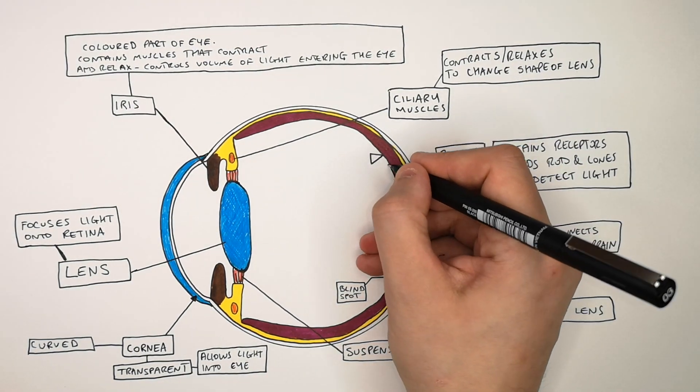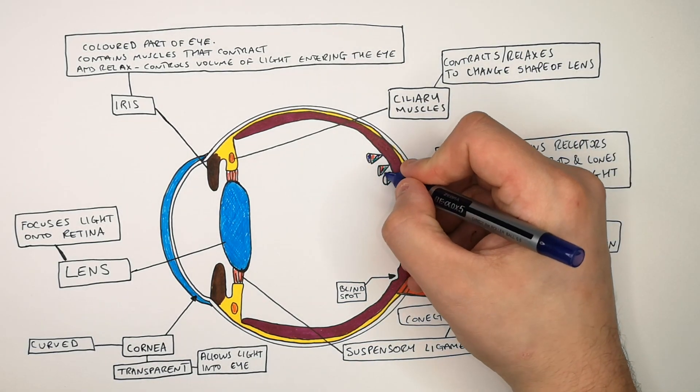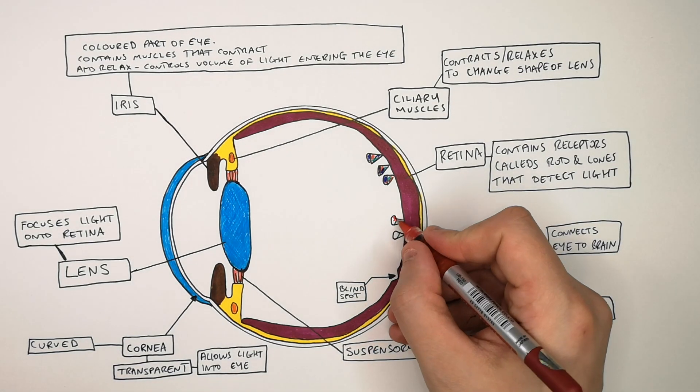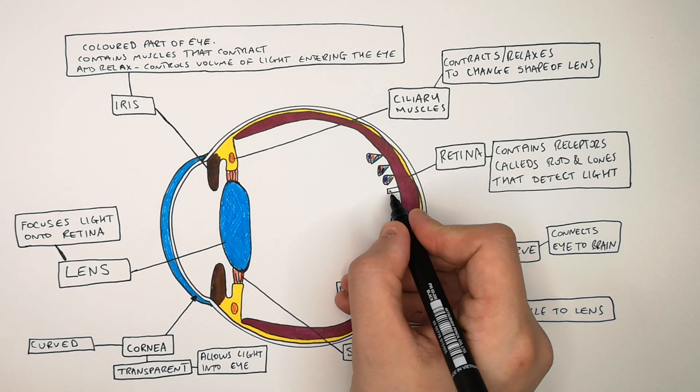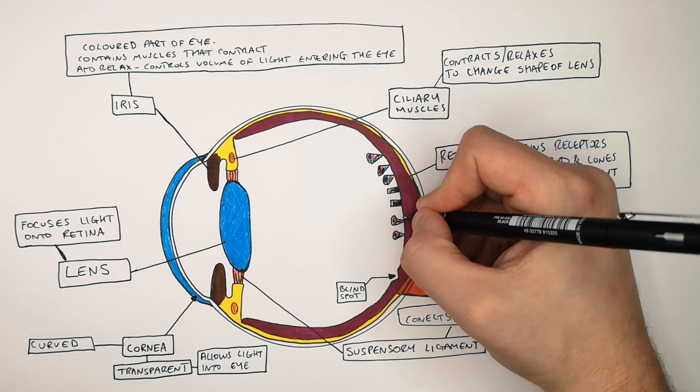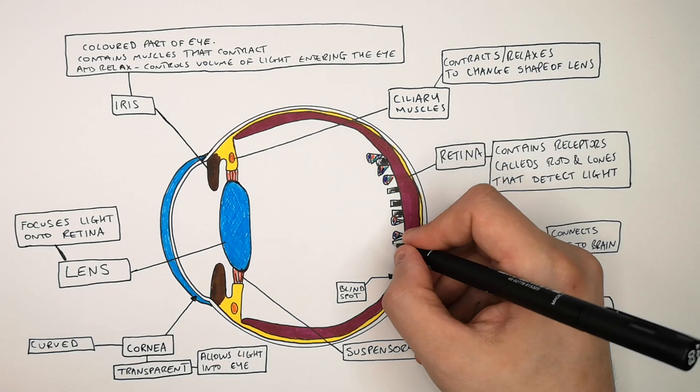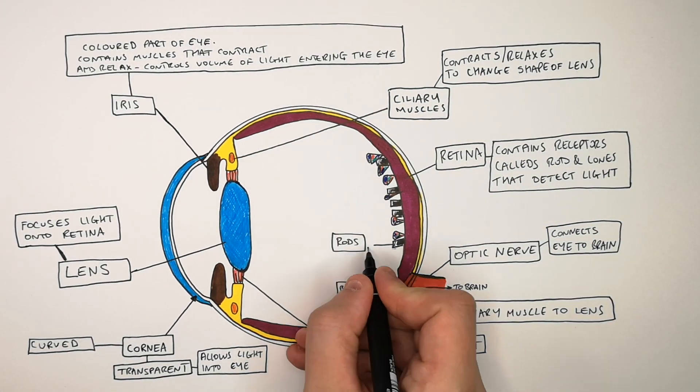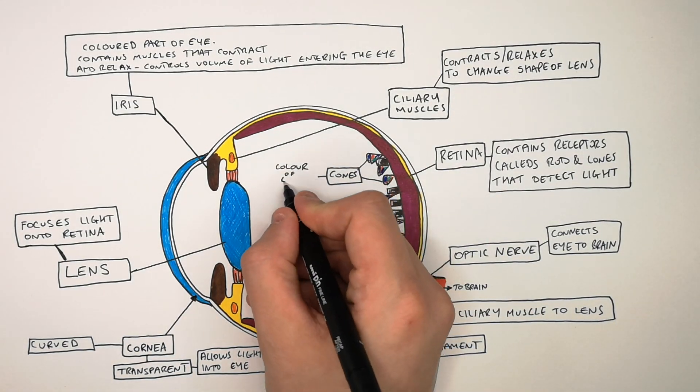On your retina are rods and cones. These are receptors that detect light, color and light intensity. I'm now drawing the cones. The cones detect the color of the light. I'm now drawing the rods. These are the rods and they detect the light intensity. They do not detect black and white light. They do not detect the color of the light. They detect how intense the light is. So remember, rods detect light intensity, whereas cones detect the color of the light.